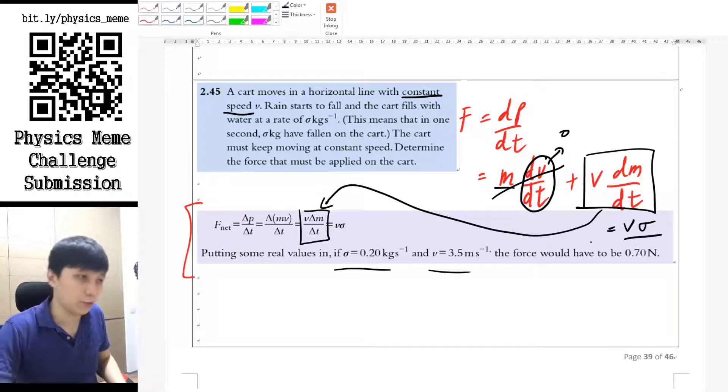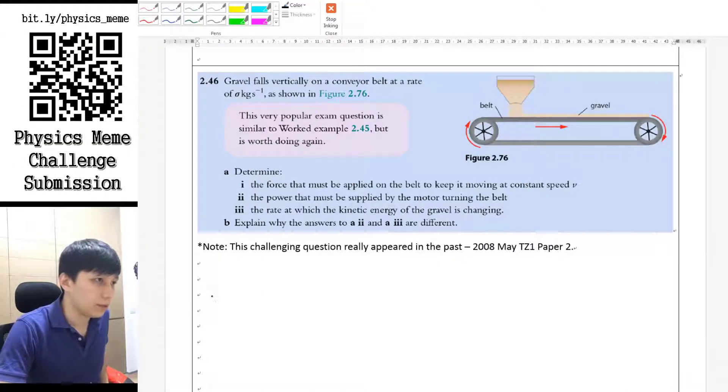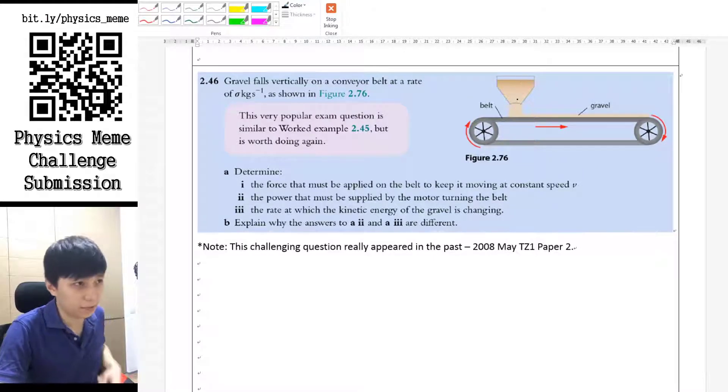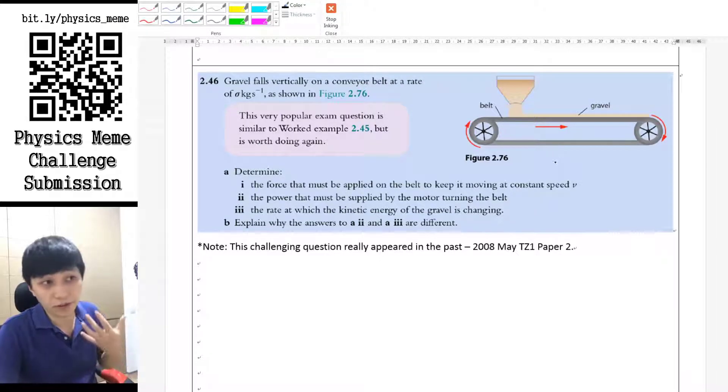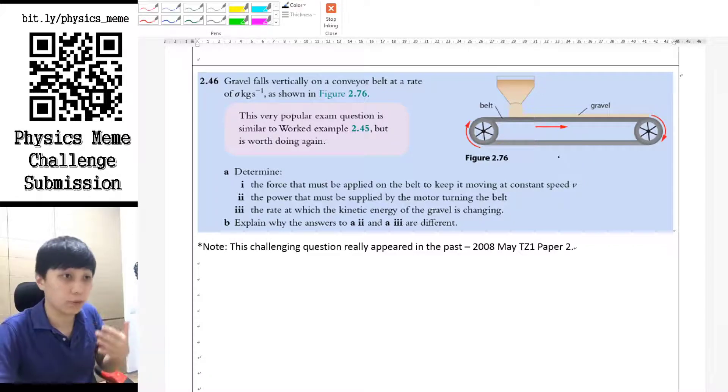The next question is that there is some sort of sand that has been pouring or graphite pouring on this conveyor belt. So the belt has to be providing force to those new sand or gravel in order to keep this moving, so there must be some energy goes into the belt as well.